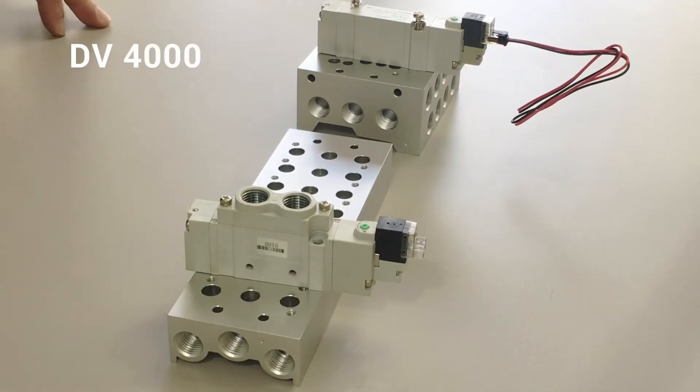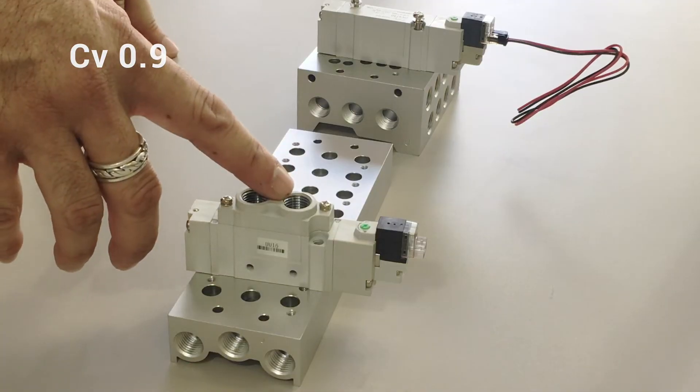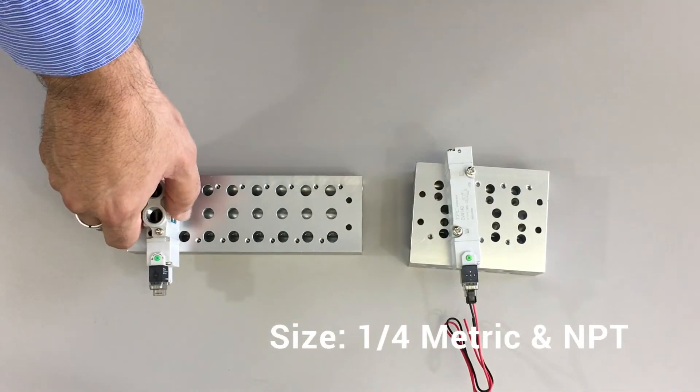This is our DV4000 series of valves. It can be ordered in base-ported and body-ported. The CV for this valve is 0.9.